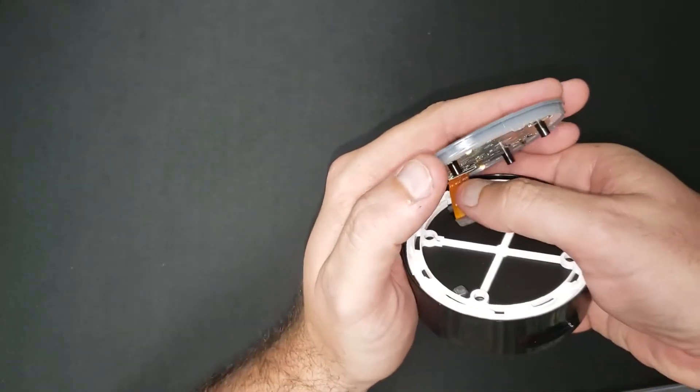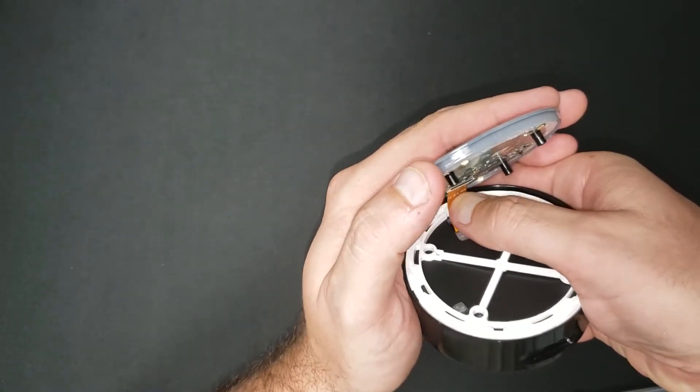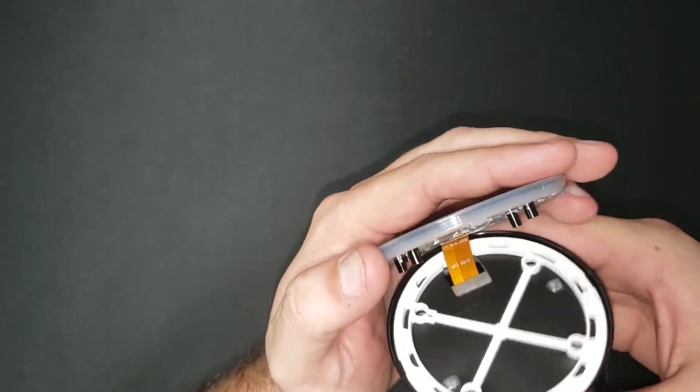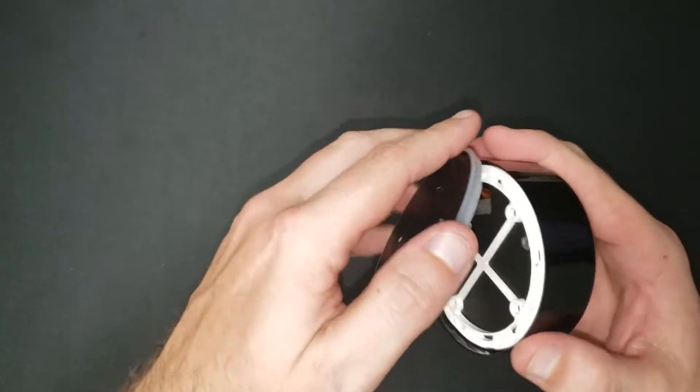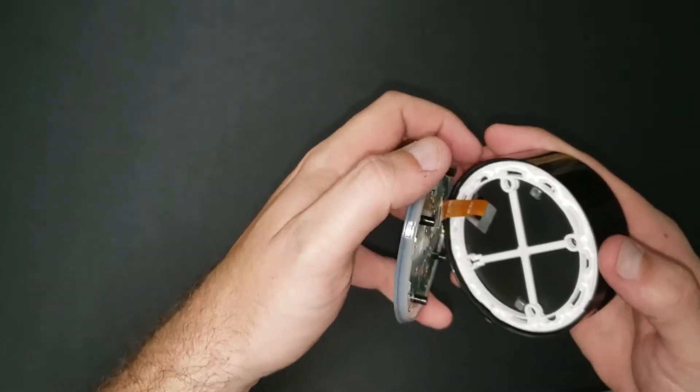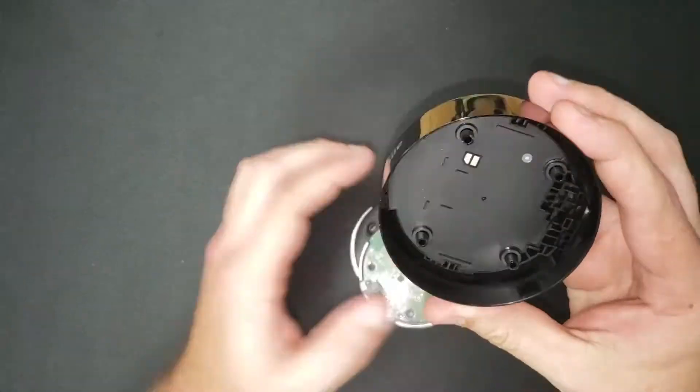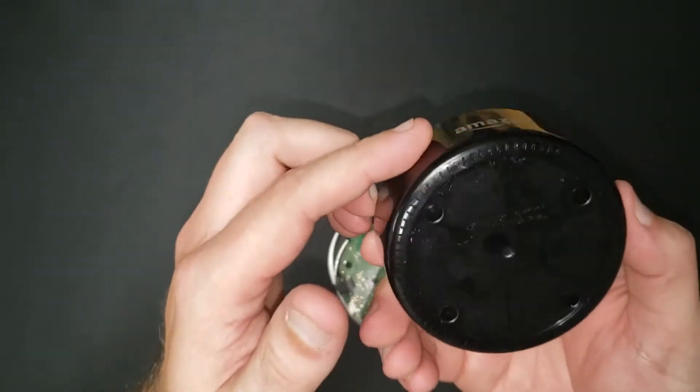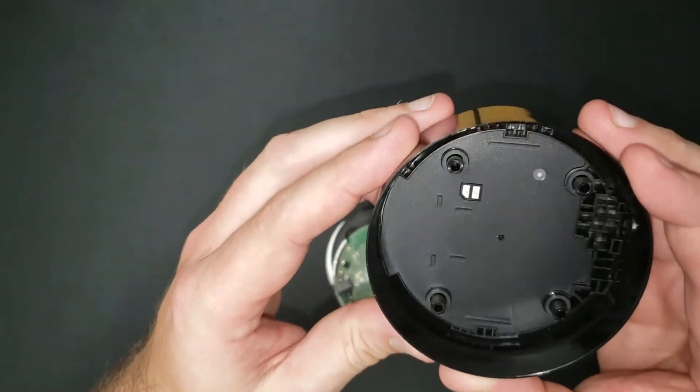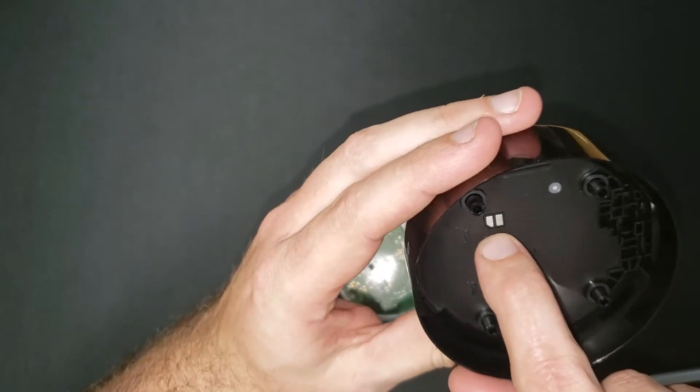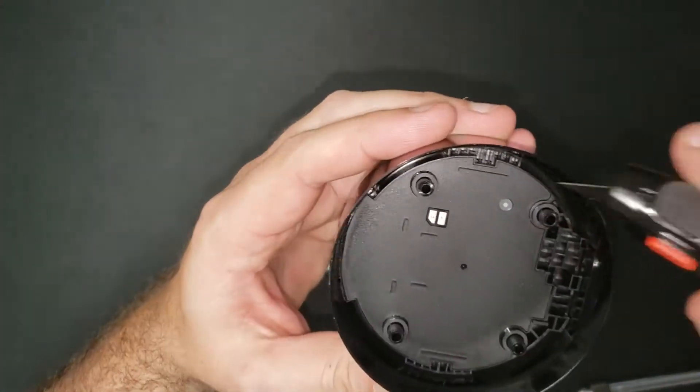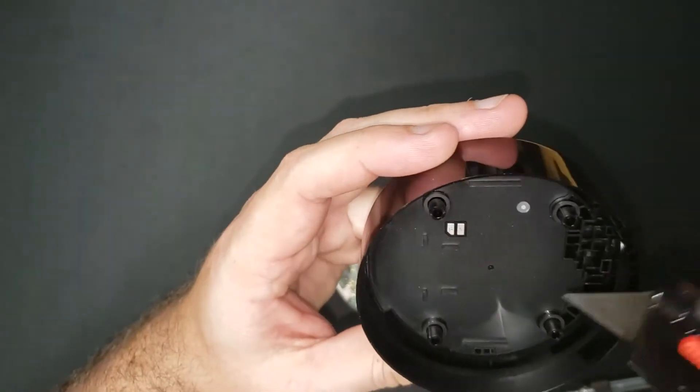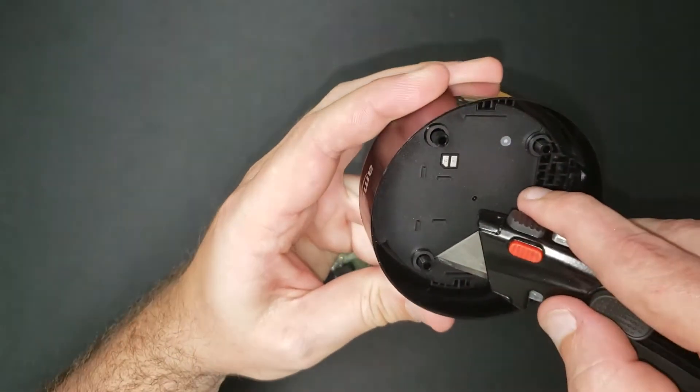All right so there we have a ribbon connector going down to the lower electronics assembly. Let's check out the main housing first. So that's an electrical connection so there's something down in there.